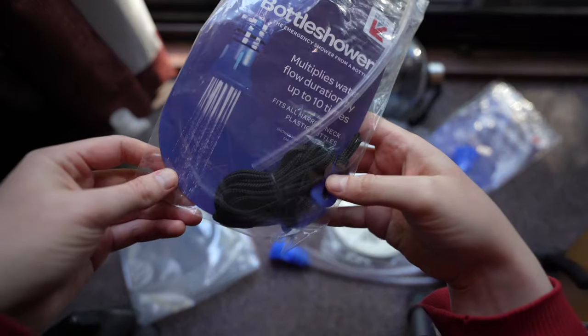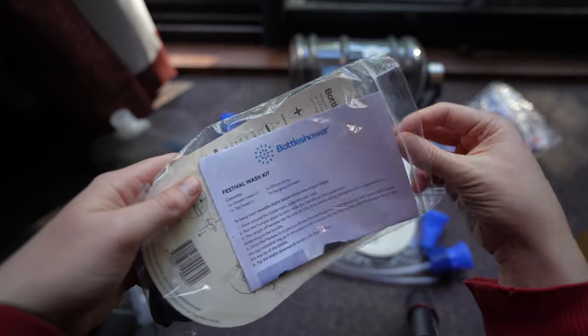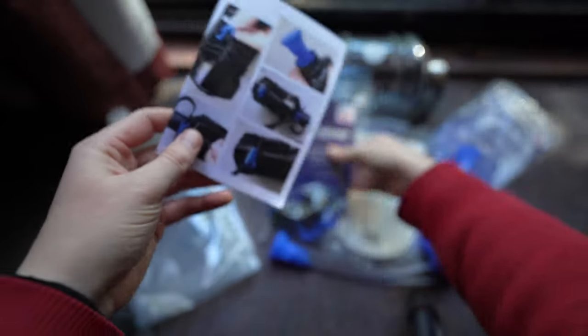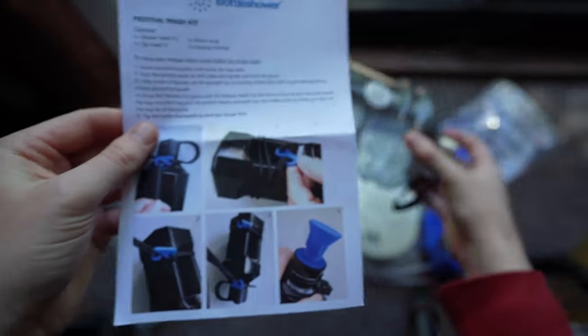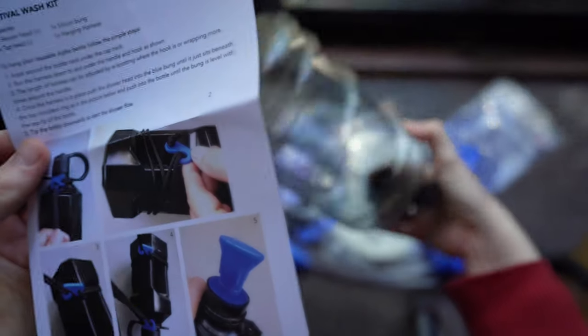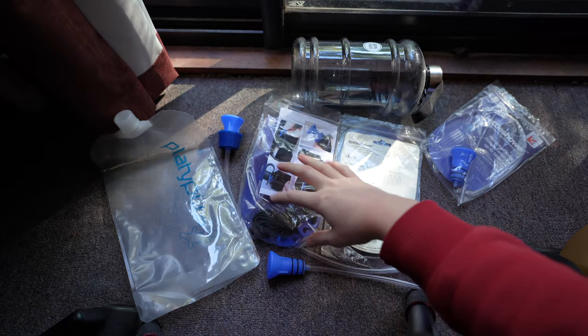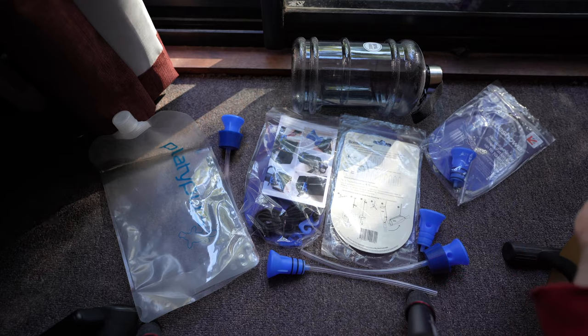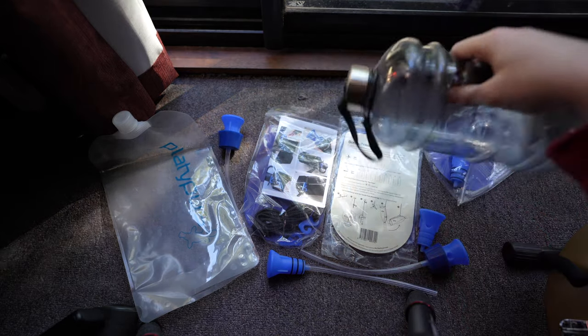This one actually comes with a bit of nylon webbing. And the idea is that you tie it to the bottle and then you can hang it with this hook like so. And so this is the festival wash kit, which fits a larger two liter. And the idea is you tie this rope around it and you can hang it. So I didn't actually bother opening that bit of nylon. I didn't really use it in that way. I just tended to hold the bottle itself by the handle here. And then I just tipped it out.